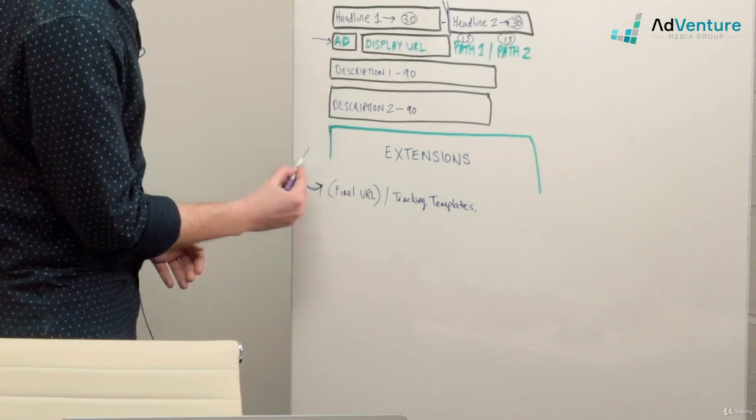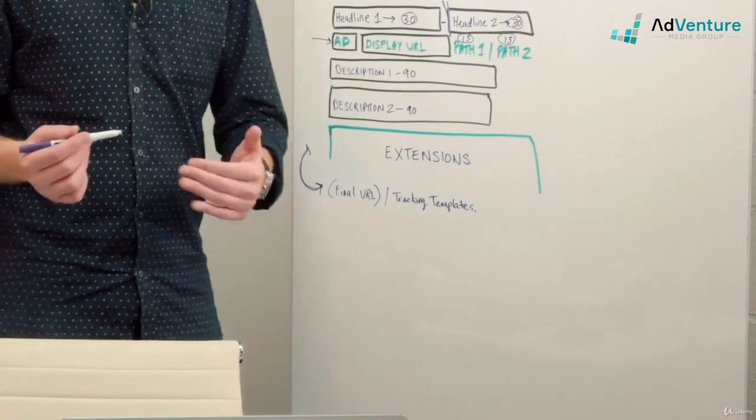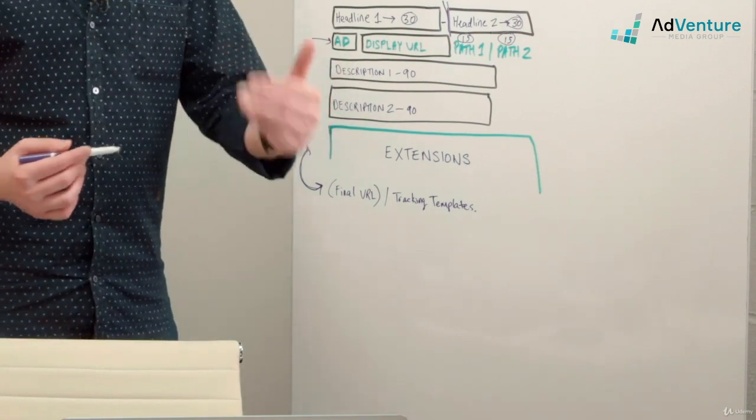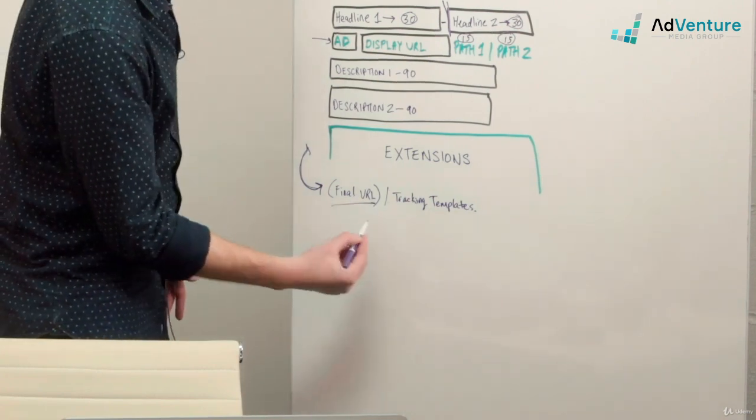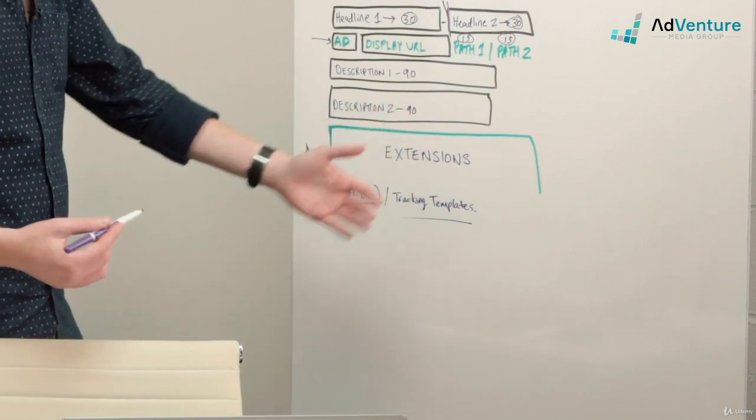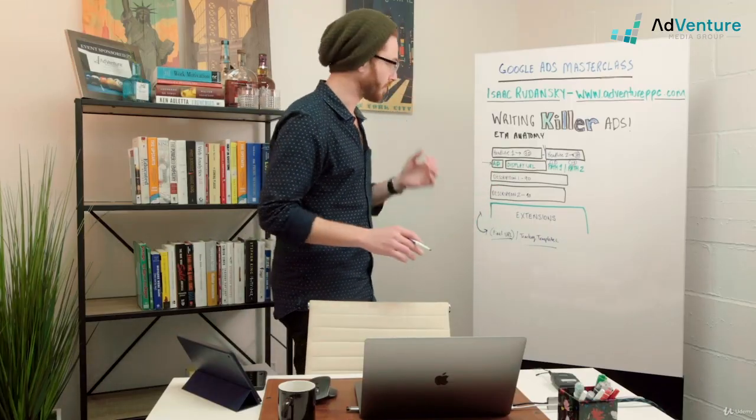You have your actual URL or final URL, potentially with your tracking template information appended to it, but your display URL could be a cleaner version of the final URL.